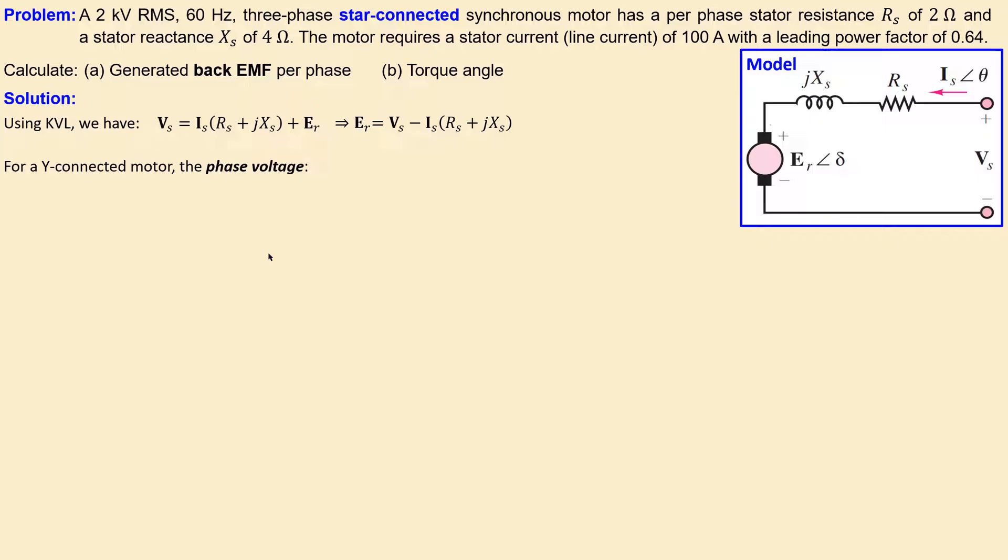For a Y-connected motor, the phase voltage VES is the line voltage over square root of 3. We have 2000 volts RMS, so this will be 2000 over square root of 3, which equals 1155 volts RMS.